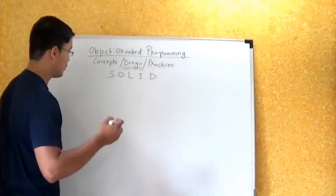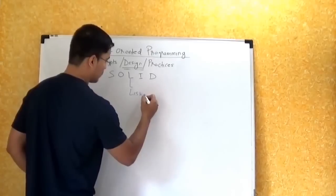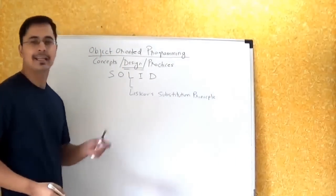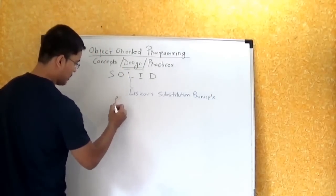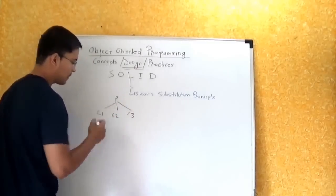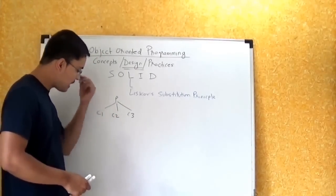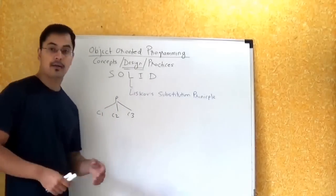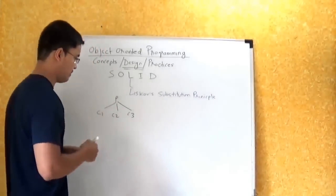The next principle we are going to talk about is Liskov's Substitution Principle. What does this say? Let's say you have one parent and child 1, child 2, and child 3. Any and every child should be able to substitute the parent while providing the functionality.